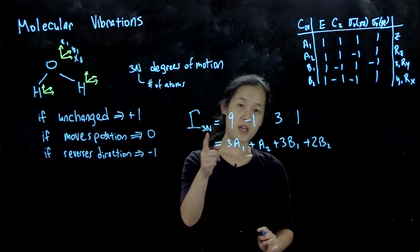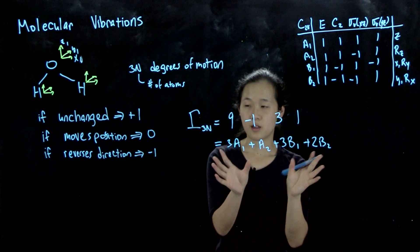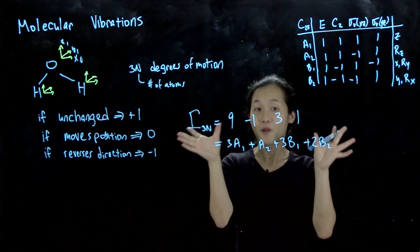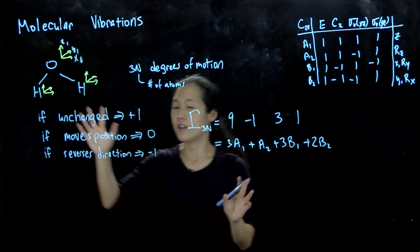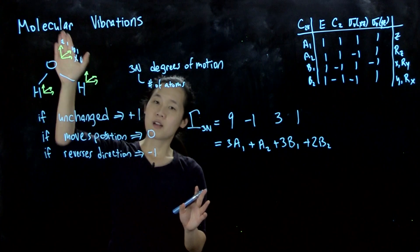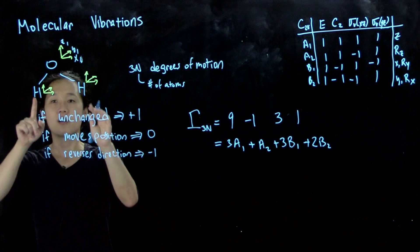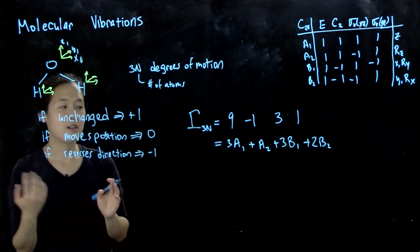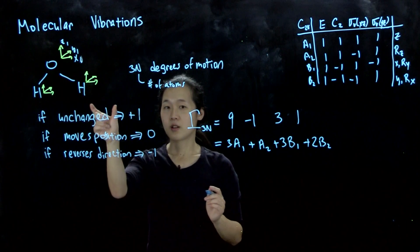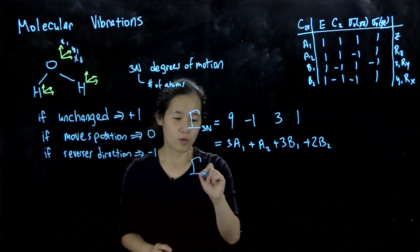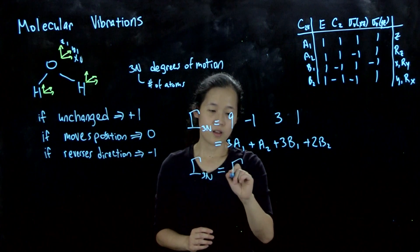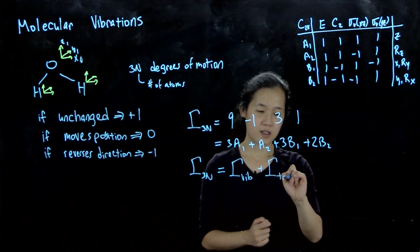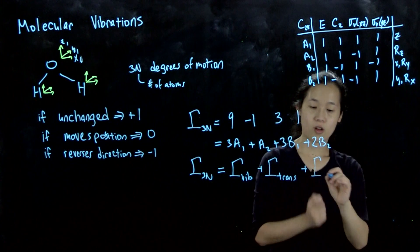So Γ₃ₙ represents all our degrees of motion. One thing to keep in mind is that these molecular motion modes also encompass the motion of the entire molecule — it includes three degrees of translation for the whole molecule. Imagine all three atoms moving up in the z-direction together; that's a translation. So we have to account for translation and rotation of the molecule, and those would not count as vibration.